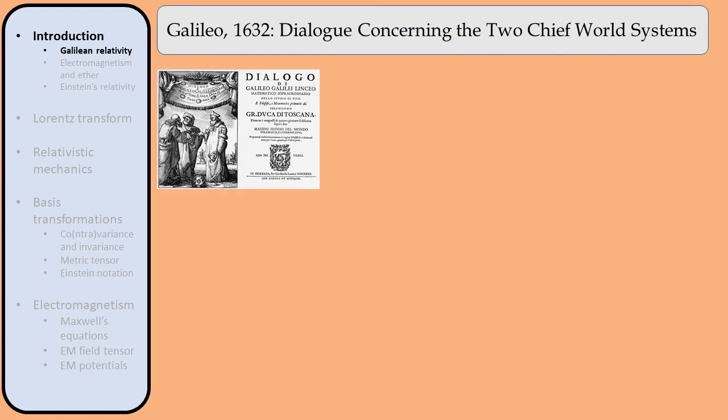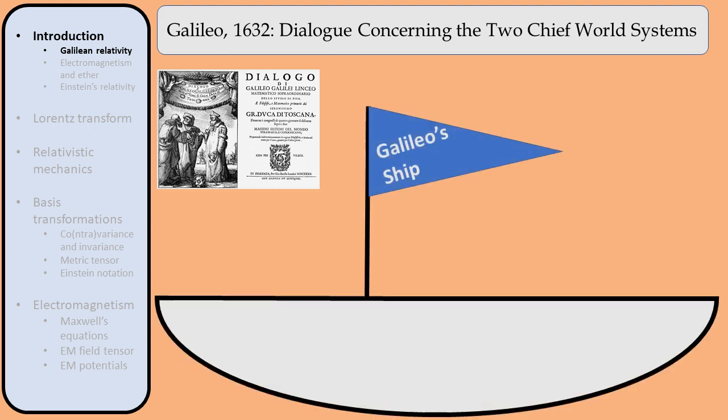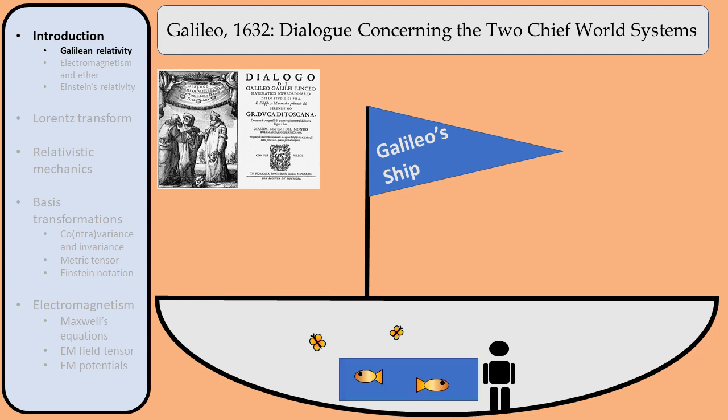In 1632, Galileo wrote a book where he discussed the geocentric and heliocentric worldviews. To address the issue of a seemingly stationary Earth, he came up with a thought experiment nowadays known as Galileo's ship. Suppose you're in a cabin below the deck of a large ship where some butterflies are flying around and some fish are swimming in a fish tank. If the ship is smoothly sailing at a constant velocity, the butterflies can still fly around the same way as if the ship were standing still, the fish can swim around like they would normally, and you can walk, jump, and interact with objects the way you would normally.